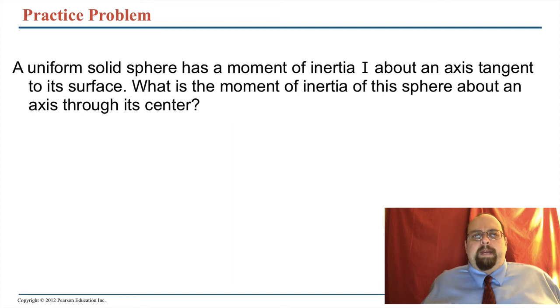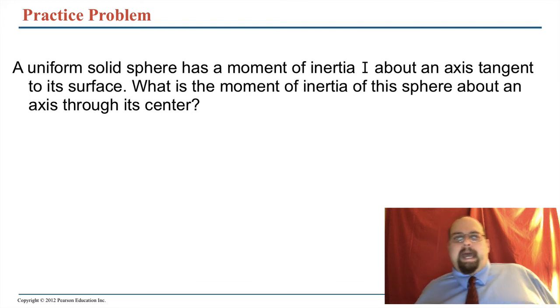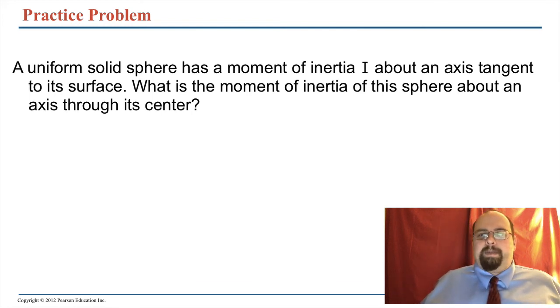All right. So here's a solid sphere. It's an example I was just using. It's got a moment of inertia, I, about an axis that is tangent to its surface. So be careful. This is backwards, right? I'm giving you the parallel axis and you're going to find the axis through the center, right? Through its center of mass. So you're going to do this backwards.